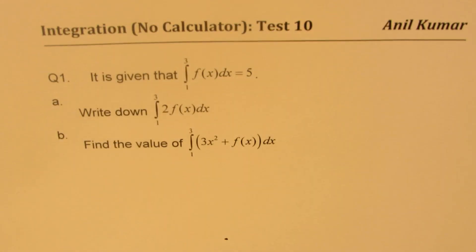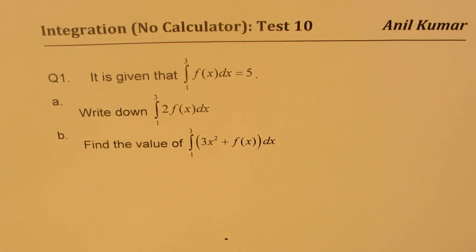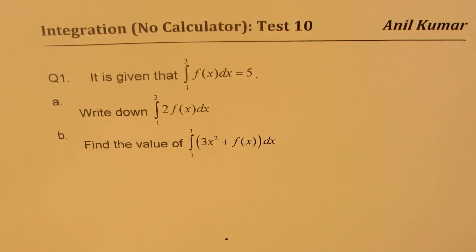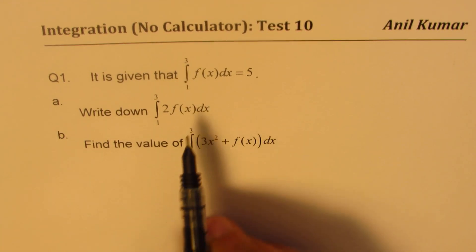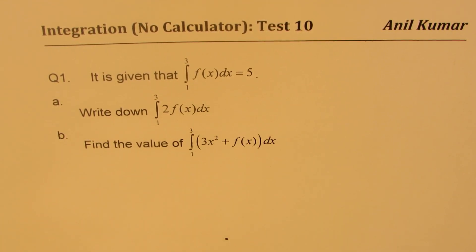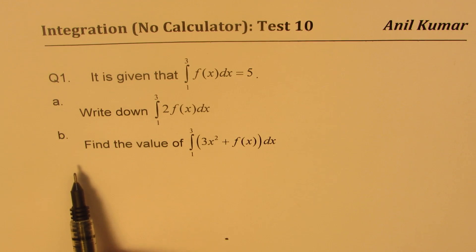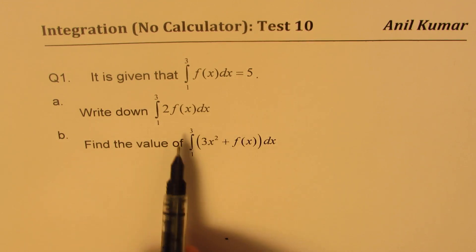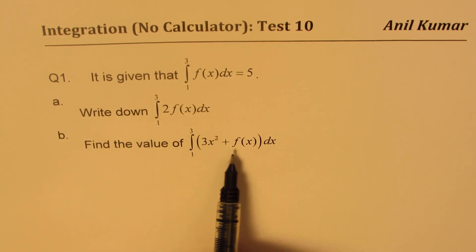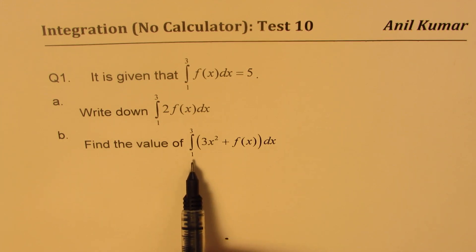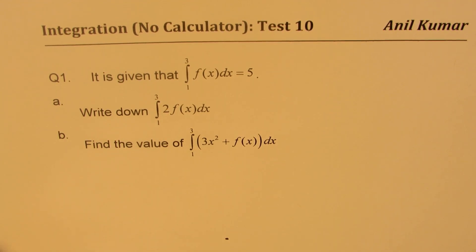Here is question number one. It is given that the definite integral from 1 to 3 of f(x) dx is equal to 5. Part A: Write down the value of the definite integral from 1 to 3 of 2 times f(x) dx. Part B: Find the value of the definite integral of 3x² plus f(x) dx with lower limit 1 and upper limit 3. You can always pause the video, answer these questions, and then look into my suggestions.